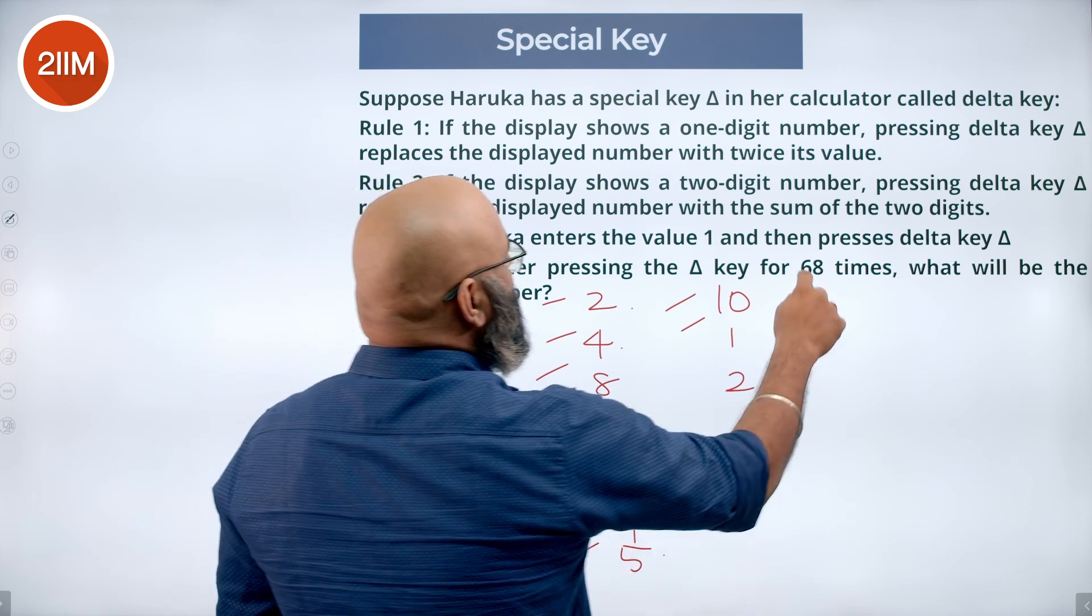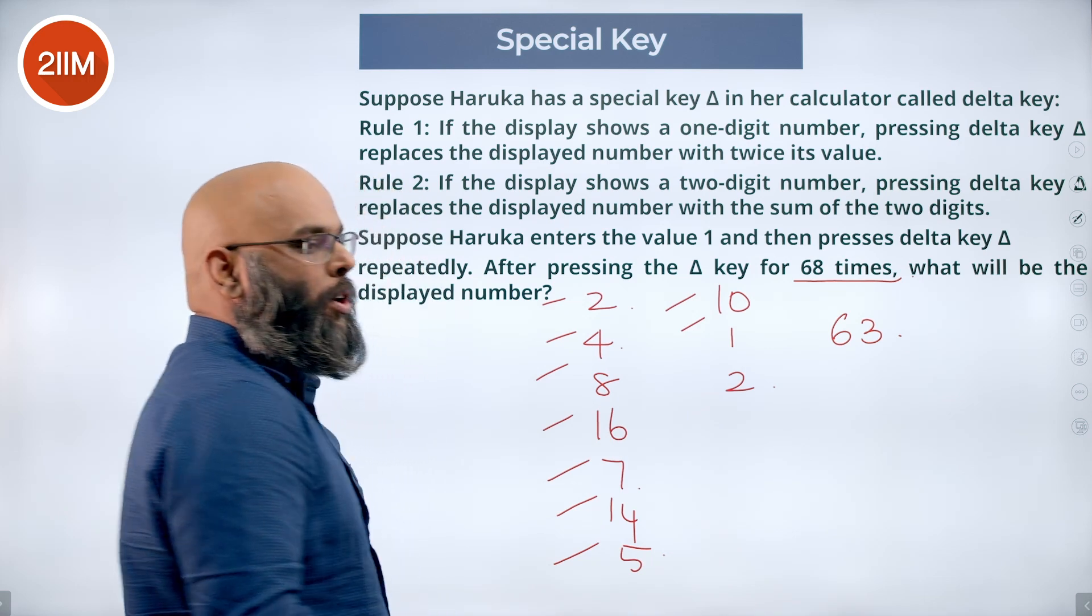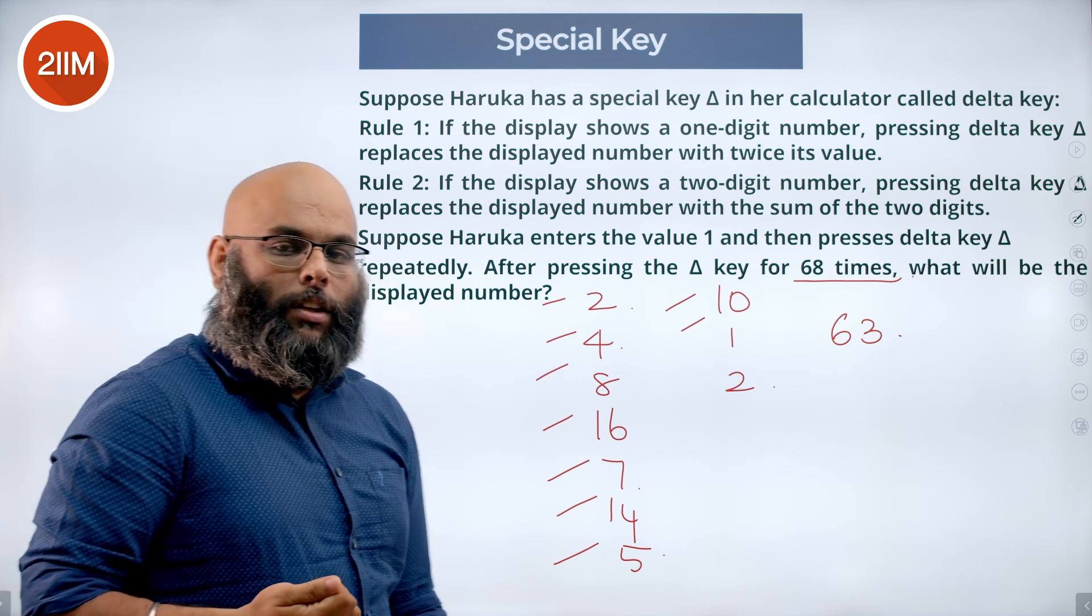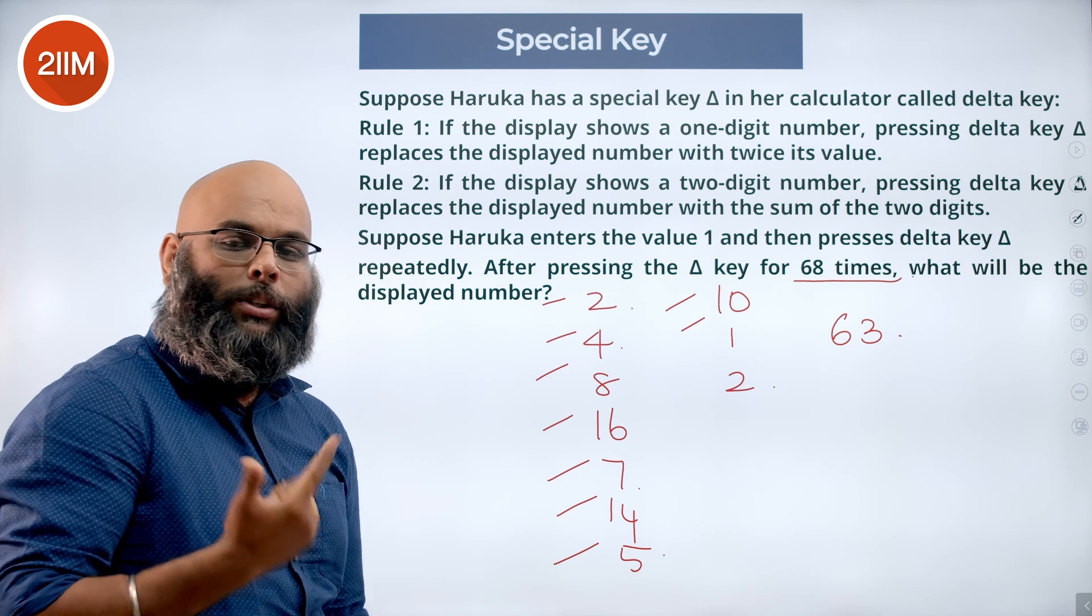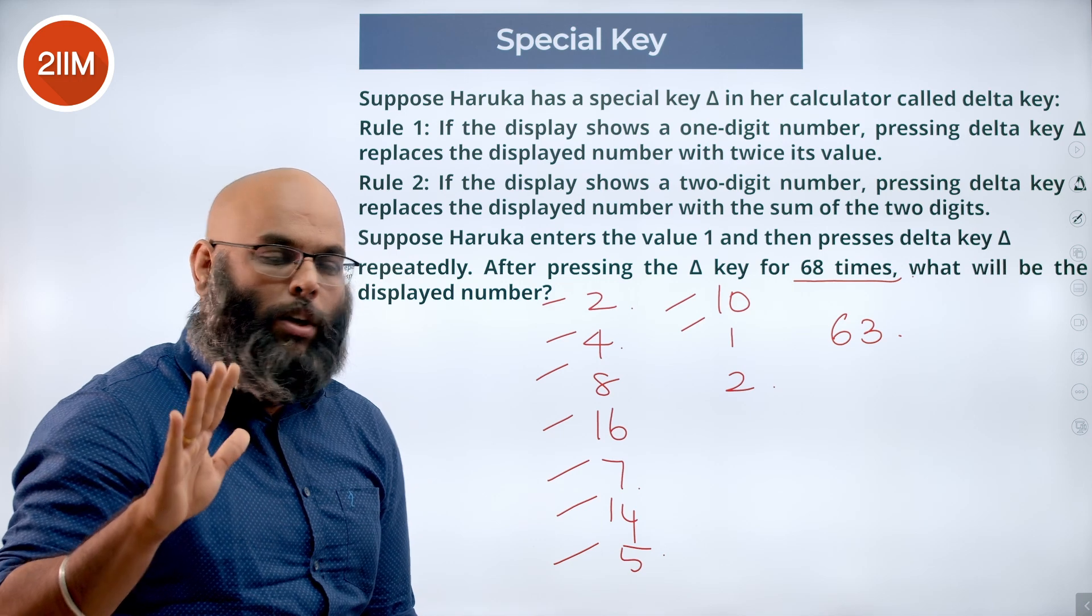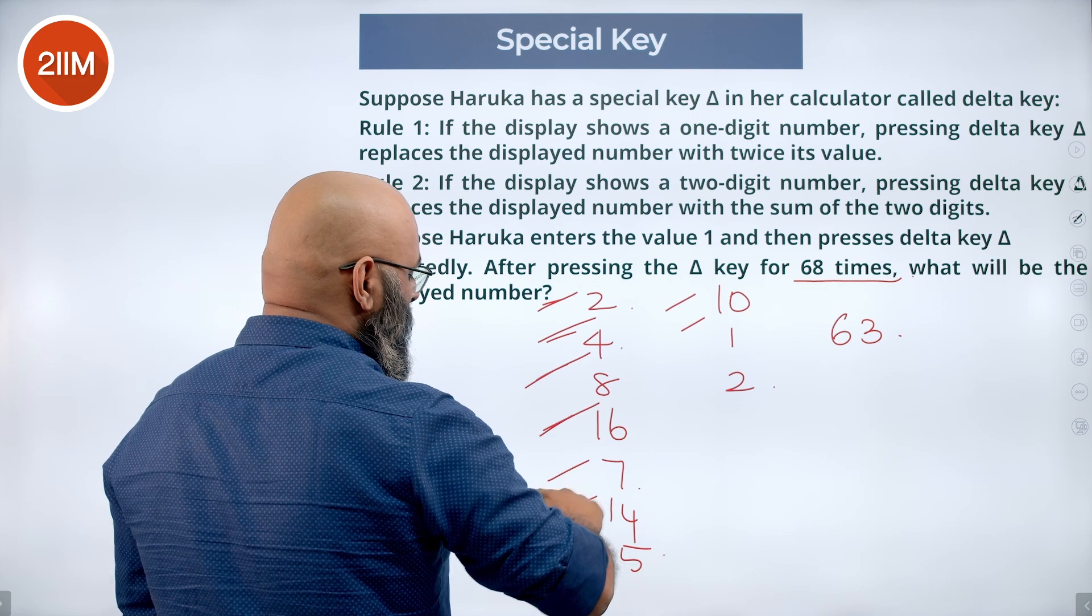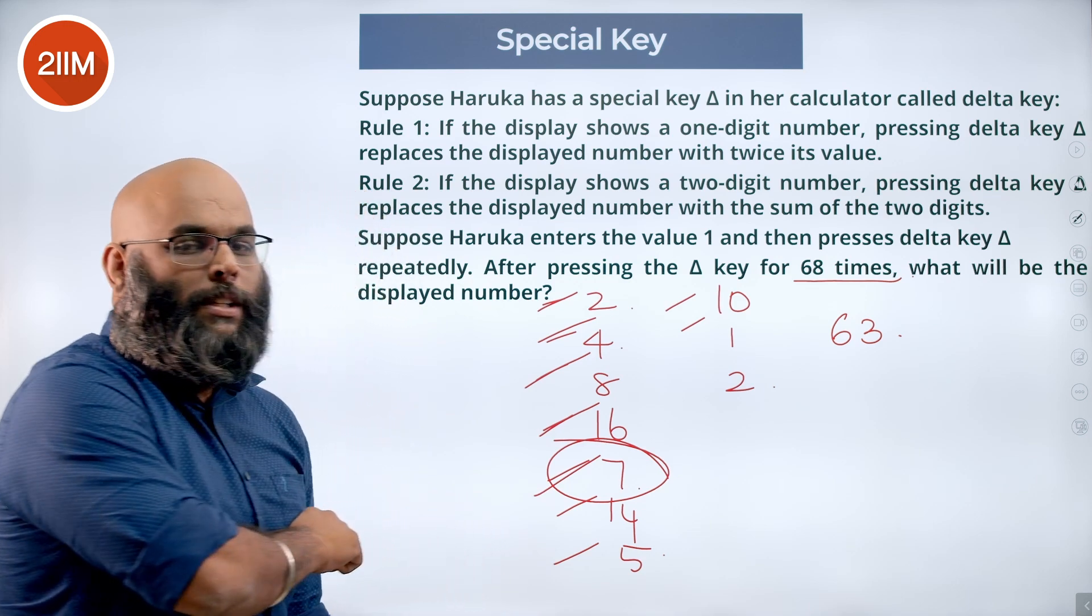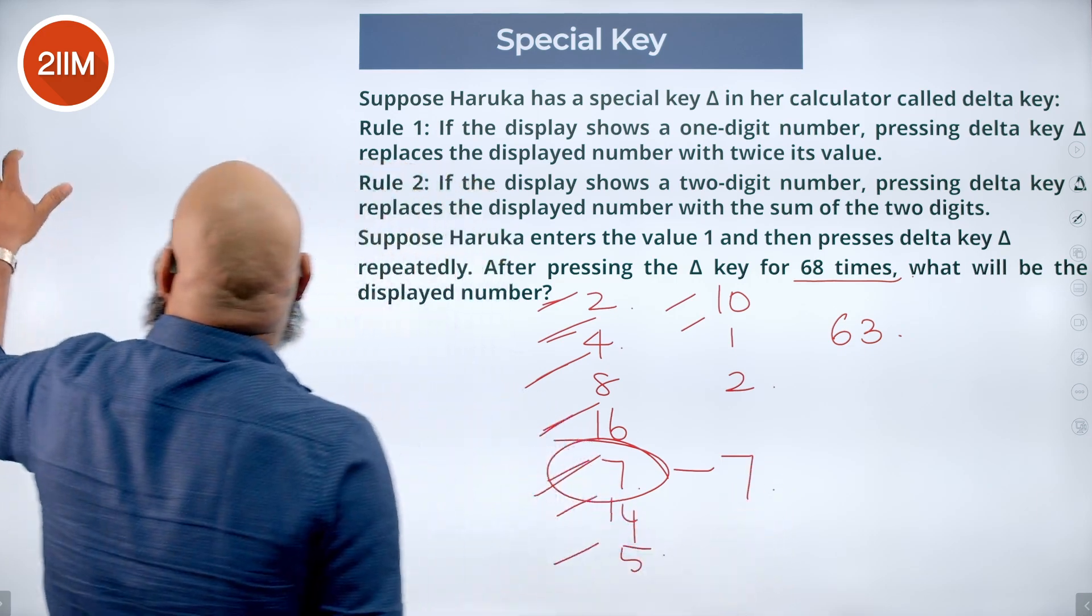So if she is going to press it for 68 times, after the 63rd time—because after every 9th I go back to 2—at the 63rd time, I go back to 2. So again after 63: 64, 65, 66, 67, 68. She has to press delta key 5 more times to go to 68. So from here: 1, 2, 3, 4, 5. The fifth time she presses after 63, she gets 7. So pressing 1, and if you press delta 68 times, the answer is going to be 7.